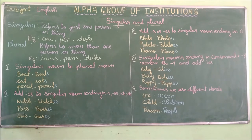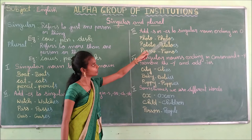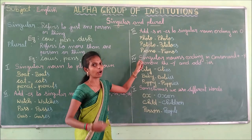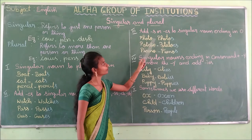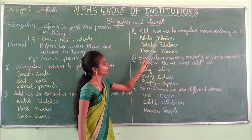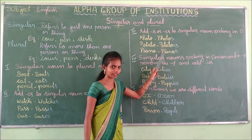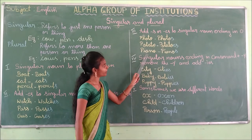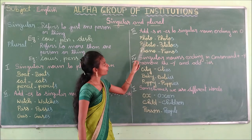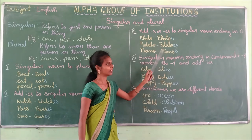Third rule: add S or ES to singular nouns ending in O. Photo ends in O, so photo→photos. Potato→potatoes — we add ES. Piano→pianos — we add S. Repeat: photo, photos, potato, potatoes, piano, pianos.